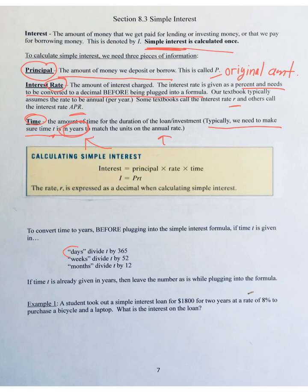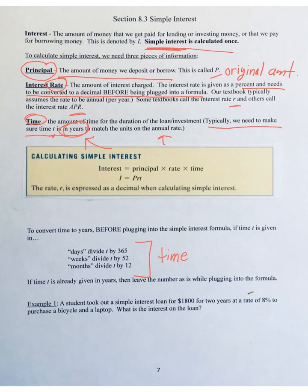If they give you the time in days, divide that number by 365 since there are 365 days in a year. If they give you the time in weeks, divide by 52 because there are 52 weeks in a year. If they give you the time in months, divide by 12 because there are 12 months in a year. This converts your time to years to match the annual interest rate unit in the formula. Make sure your time is in years — cannot stress that enough.